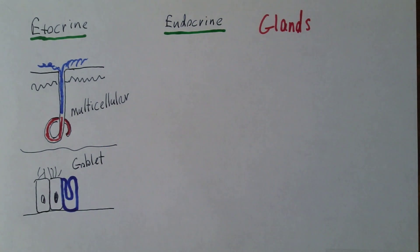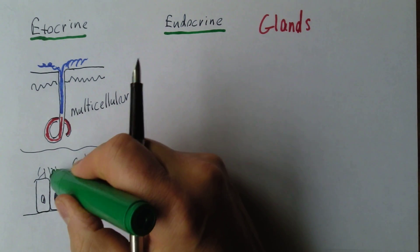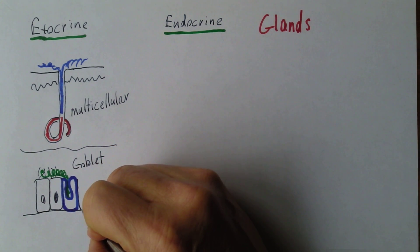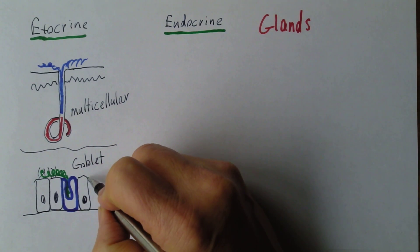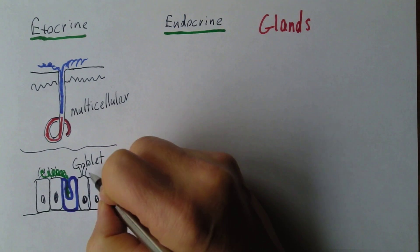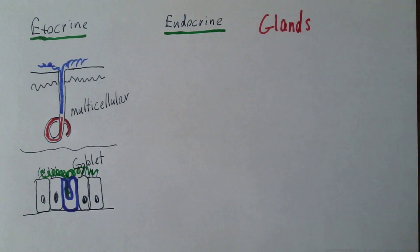So they called them goblet cells. And they produce mucus that goes onto the surface of the respiratory epithelium, the endothelial lining. And that's good because that forms the mucociliary clearance system.